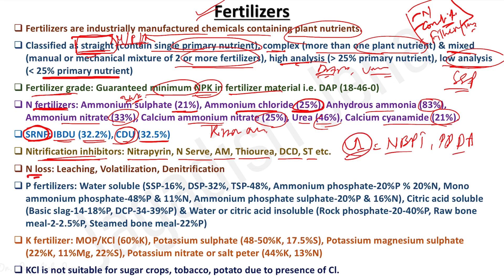Nitrogen losses include: leaching loss — nitrate fertilizers are highly soluble and prone to leaching; volatilization loss — occurs in alkaline soils at high temperature as ammonia volatilizes; denitrification — in prolonged submergence, facultative aerobes consume nitrate oxygen, converting nitrogen back to N₂ or nitrous oxide released to the atmosphere.